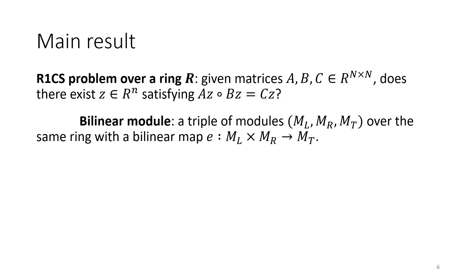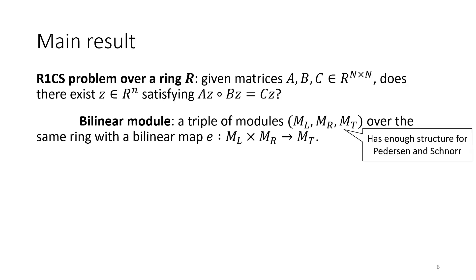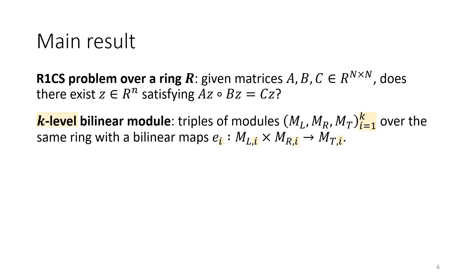In a bilinear module, we have a left module and a right module and a bilinear map which multiplies left and right elements together to give an element in the third module — the target module MT. You can think of this as a mathematical structure over which you can compute generalized Pedersen commitments and run a kind of generalized Schnorr protocol.